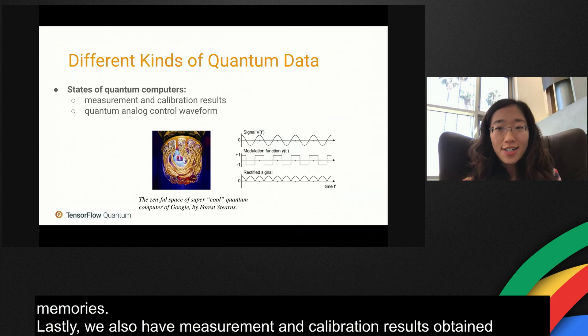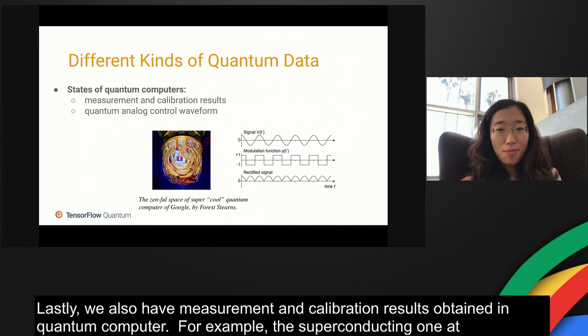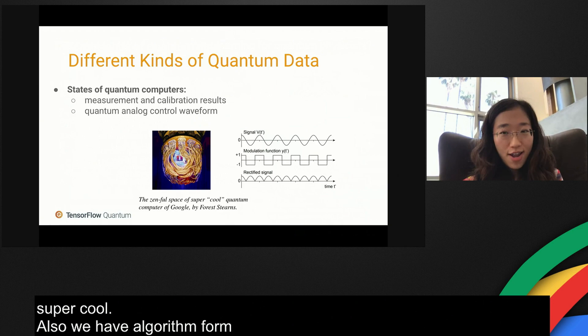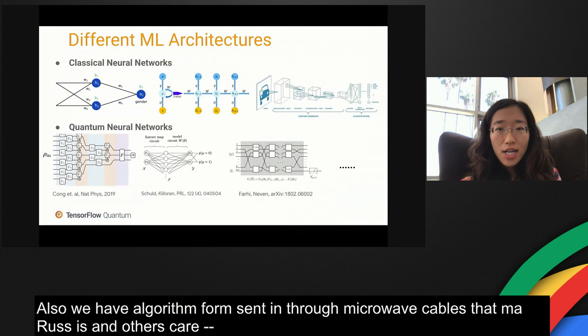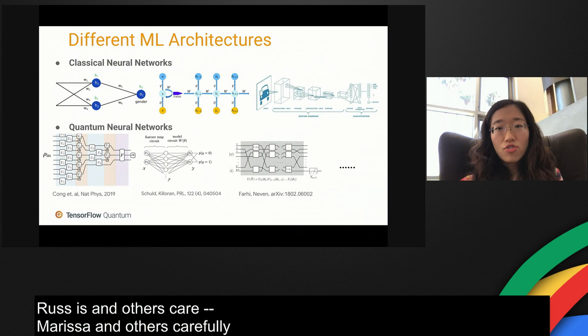Lastly, we also have measurement and calibration results obtained in a quantum computer. For example, the superconducting one at Google. It is super cool. Also, we have analog waveforms sent in through microwave cables that Marisa and others carefully arranged to control our quantum computers.